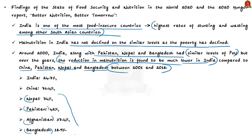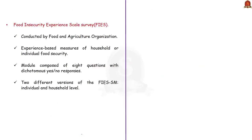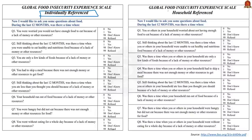For India, the prevalence of undernourishment declined only by 24.7% between 2001 and 2018, compared to Nepal at 74%, Pakistan at 42%, and Afghanistan at 37%. The authors also discuss the Food Insecurity Experience Scale survey conducted by the FAO, which includes experience-based measures of household or individual food security. This survey module is composed of eight questions with yes/no responses and is available in individual and household level versions. The survey questions are given for reference.